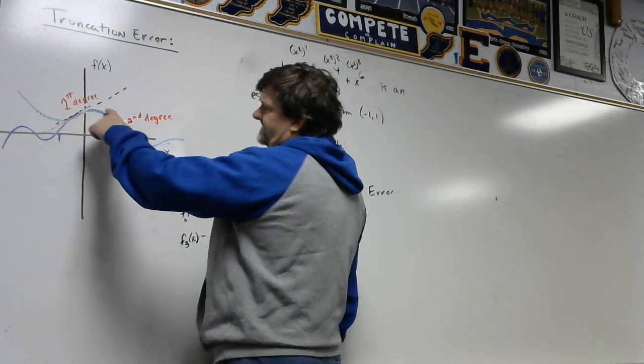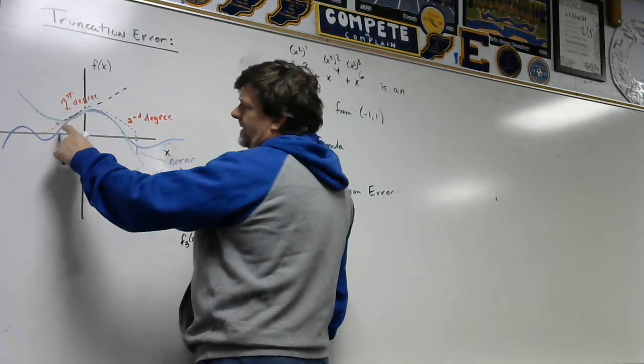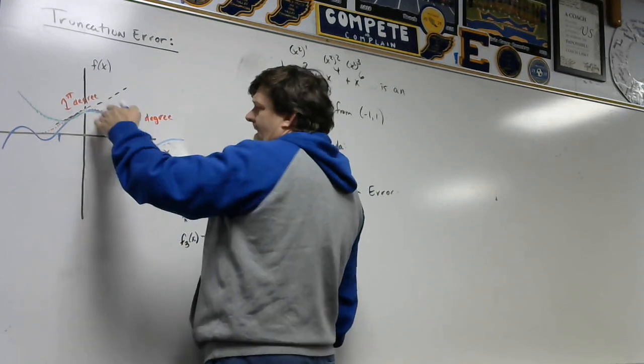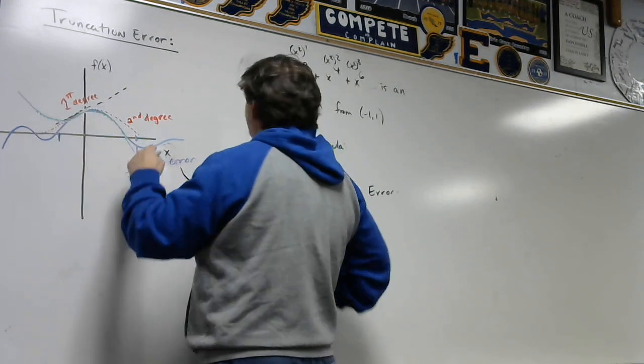And then we get a third degree which is this green line and it gets a little better. So they start getting better and better and better as the farther you go out on the Taylor series.